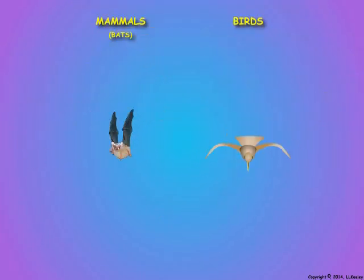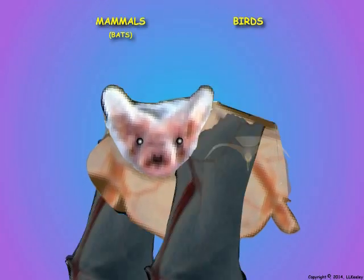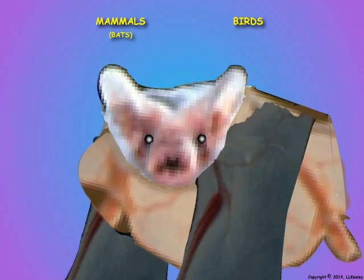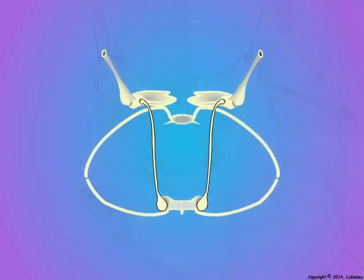Next, the skeleton and muscles of bats will be identified as they relate to flight. Here is the same cross-sectional view of a skeleton of a typical bat thorax at the level of the wings. Bats are flattened animals adapted to squeezing into tight crevices, so there is no enlarged sternum and protruding carina like that of birds.